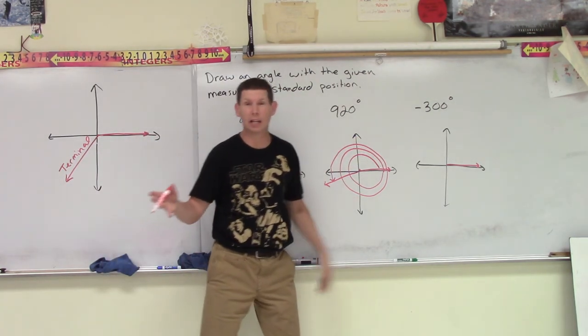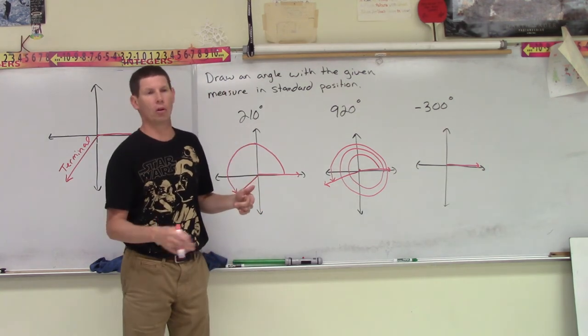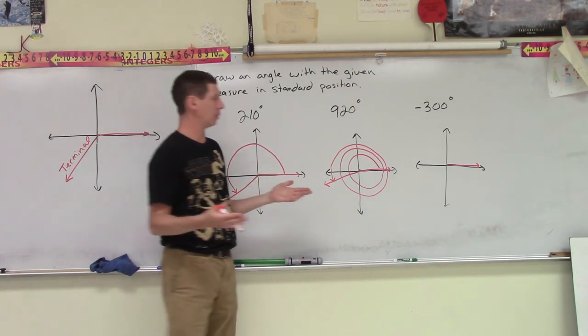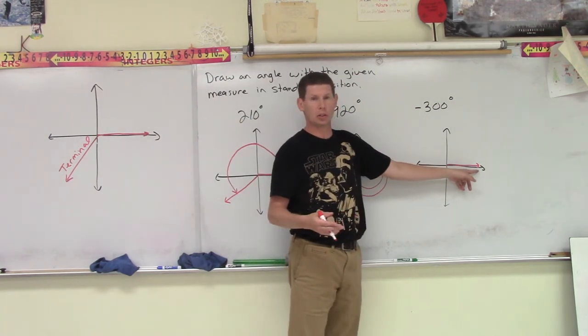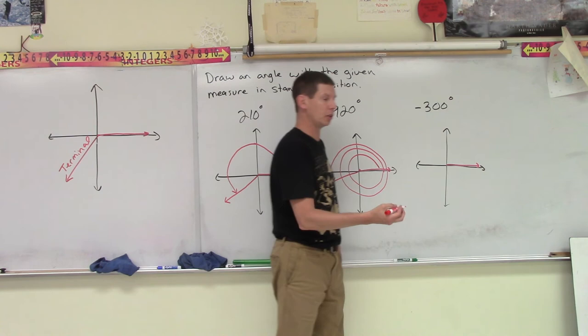And what if it's negative? If it's negative, you just go clockwise. We go in the opposite direction. So we have our beginning side, our initial side there. And now we need to spin 300 degrees.